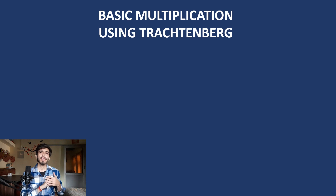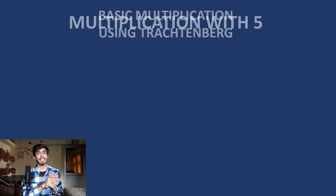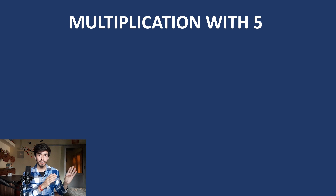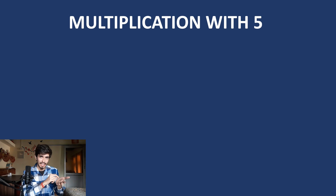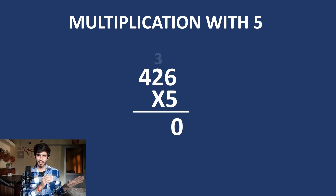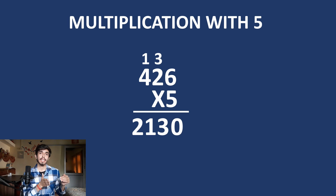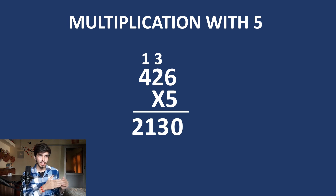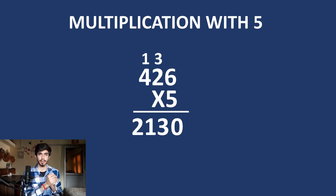First, let us learn something easy — multiplication with 5 using the Trachtenberg system. Traditionally, if you want to multiply with 5 we can do it really quickly. But let us learn how to do this using the Trachtenberg system and see why this system is better.